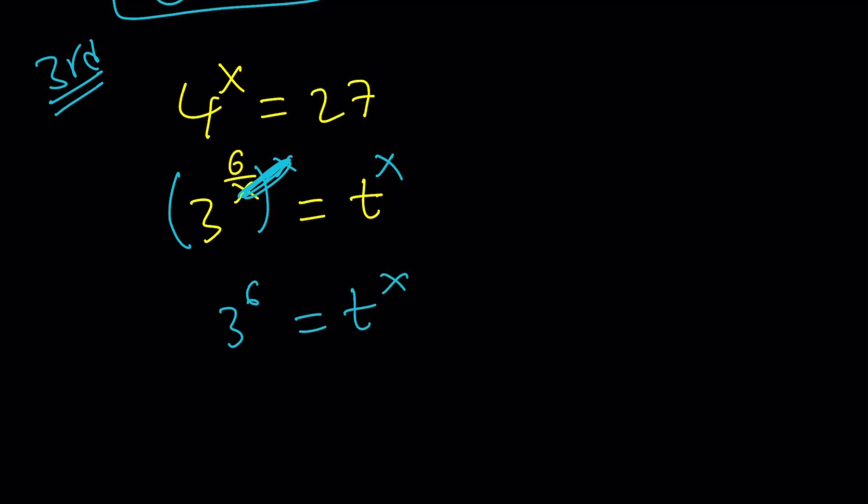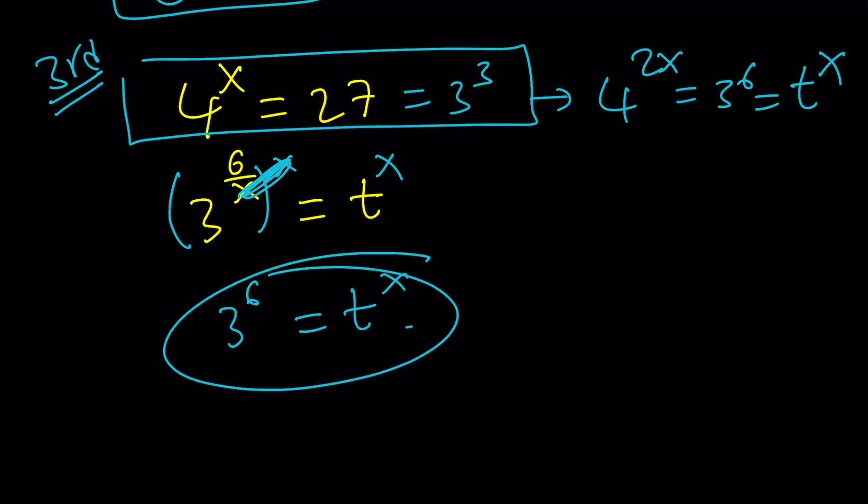Now I have 4 to the x equals 27, which is 3 to the 3rd. So let's square both sides here. That gives us 4 to the power of 2x equals 3 to the 6. But 3 to the 6 is t to the x. Let's replace it with that.